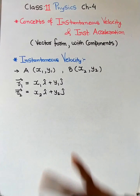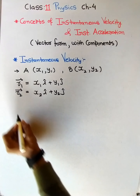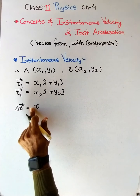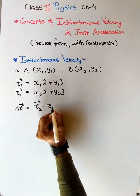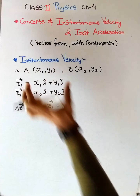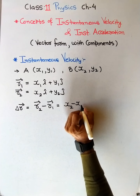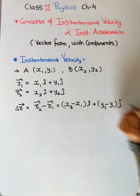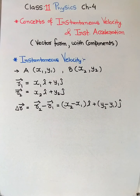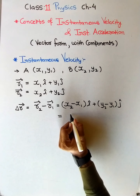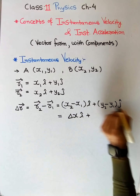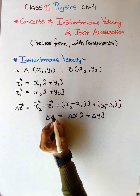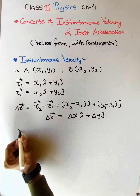Velocity is displacement upon time, so let us find the displacement from r1 and r2. The displacement vector delta r equals r2 vector minus r1 vector, which gives us (x2 - x1)·i + (y2 - y1)·j. Note that i and j must be repeated along with the components. So if x2 - x1 is delta x and y2 - y1 is delta y, then delta r = delta x·i + delta y·j.